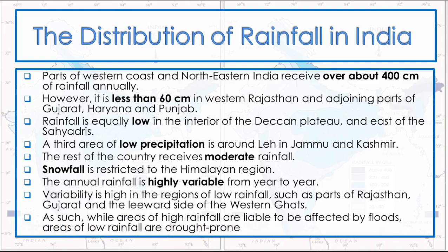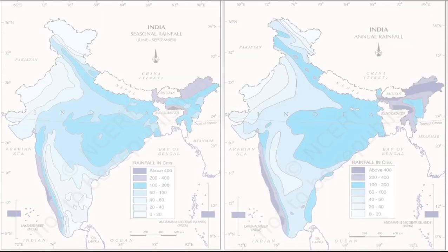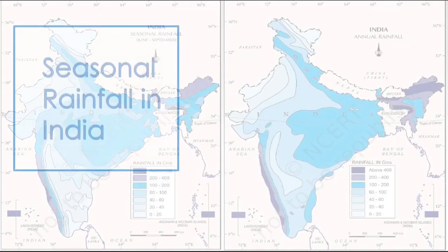As such, while areas of high rainfall are liable to be affected by floods, areas of low rainfall are drought-prone. Look at the map.